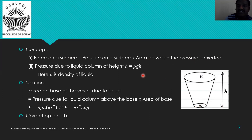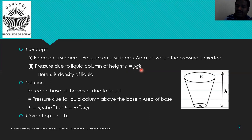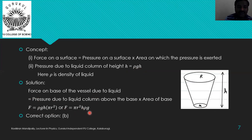The force on the base = pressure due to liquid column × area of base = ρgh × πr². Rearranging: F = πr²hρg. The correct option is option B.